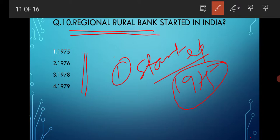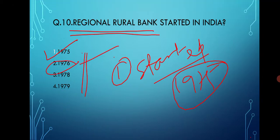The Regional Rural Bank was started in India under the 1975 Act and began operations in 1976.